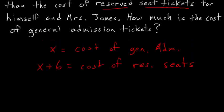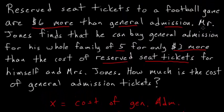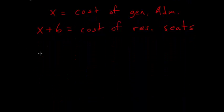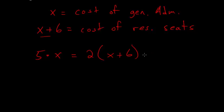Now that we have our variable, let's take a closer look at this second sentence. Mr. Jones finds that he can buy general admission tickets for five people for only three dollars more than the cost of the reserved seat tickets for himself and his wife. So we can make an equation: five general admission tickets is the same thing as two reserved seat tickets plus three dollars. That gives us five times x equals two times (x plus six) plus three.